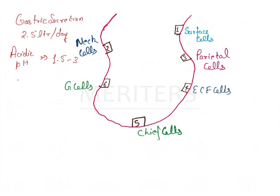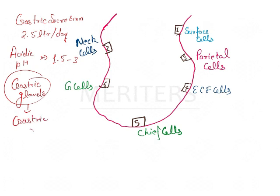The source of the secretion is the flask-shaped structures called gastric glands. Gastric secretion is carried out by the gastric glands, which are basically flask-shaped structures.